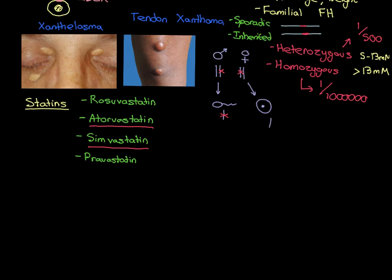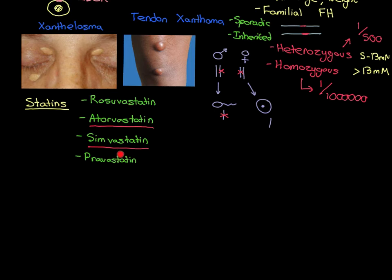The order I've written them in is order of potency - how strong they are. Rosuvastatin is the strongest statin - very, very powerful. If a lower-down one fails to work, we can move people onto rosuvastatin. Atorvastatin is number two, simvastatin is number three, pravastatin is the weakest. The main two used are atorvastatin and simvastatin. Simvastatin is gradually replacing atorvastatin - atorvastatin used to be the go-to one, but nowadays we are gradually moving towards simvastatin because it is slightly gentler and has less chance of causing one of the classic side effects.